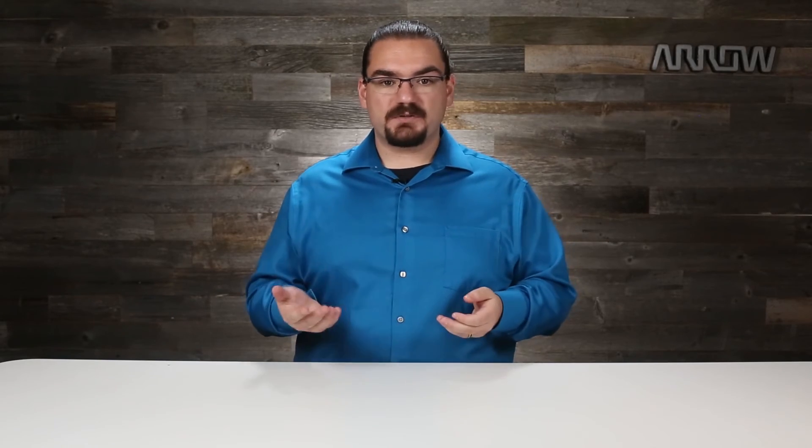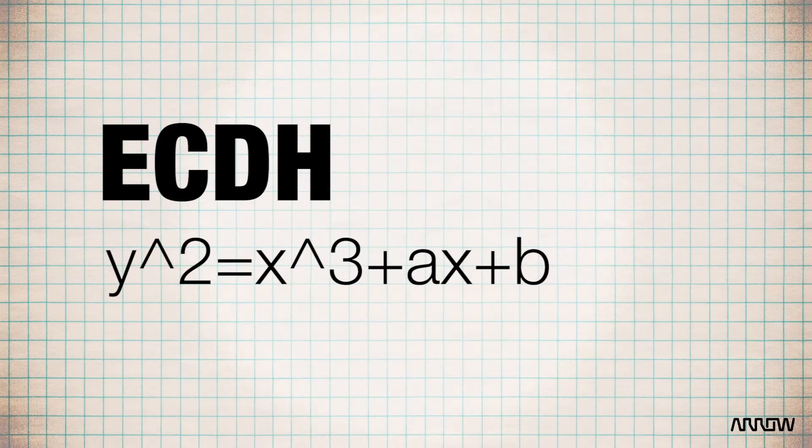Bluetooth 4.2 has improved security dramatically. The numeric comparison method is added to the other three methods, and ECDH — elliptic curve Diffie-Hellman algorithm — is used for key exchange in the process. The principle is based on an elliptic curve in the form of Y² = X³ + AX + B. In this video we aren't going to go into the details of the addition and multiplication for elliptic curves, but be aware that they are very secure and it's close to impossible to reverse.